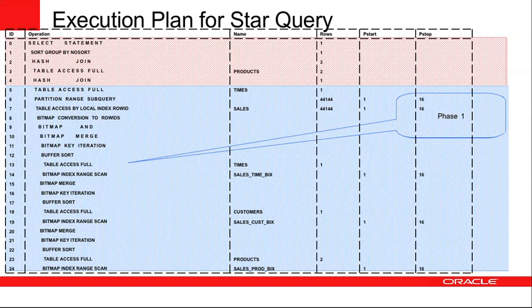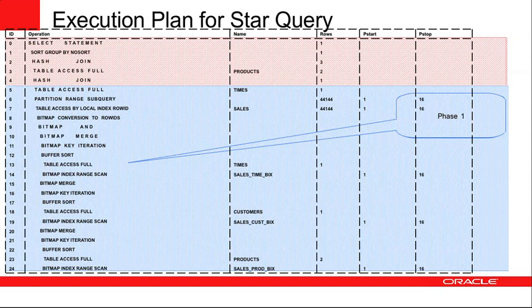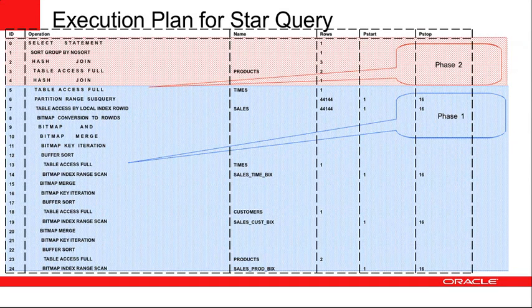In phase one the query is rewritten to go only against the sales table, with subquery predicates in the where clause going against the dimension tables. In the execution plan you see a full table access of each dimension table — time, customer, and product — and a bitmap index range scan on the bitmap indexes on the foreign key columns of the fact table. On line 10 we do the bitmap merge operation, and on row 8 we do a bitmap conversion to row ID, then use those row IDs to extract the full set of matching rows from the sales table. Once we have that result set it's time for phase two, where we join back to the dimension tables using that result set from the fact table.